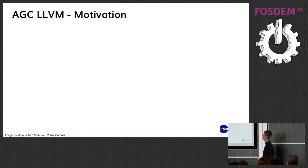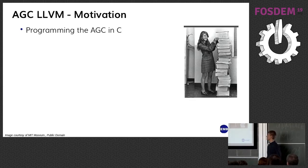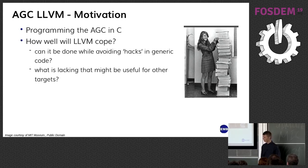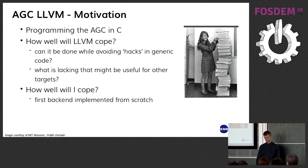So why would I choose to write an LLVM backend for this? Firstly, the original engineers that wrote the programming code for the AGC were amazingly talented — they had no help from high-level languages, worked with a huge code base, and still managed to produce safety-critical programs. However, in order to make the AGC more accessible and more understandable, it would be good to be able to program it in C. Secondly, I wanted to see how LLVM coped with generating code for this backend, notably different from modern architectures. Lastly, I wanted to see how well I would cope, since it was a totally new experience implementing a backend from scratch.